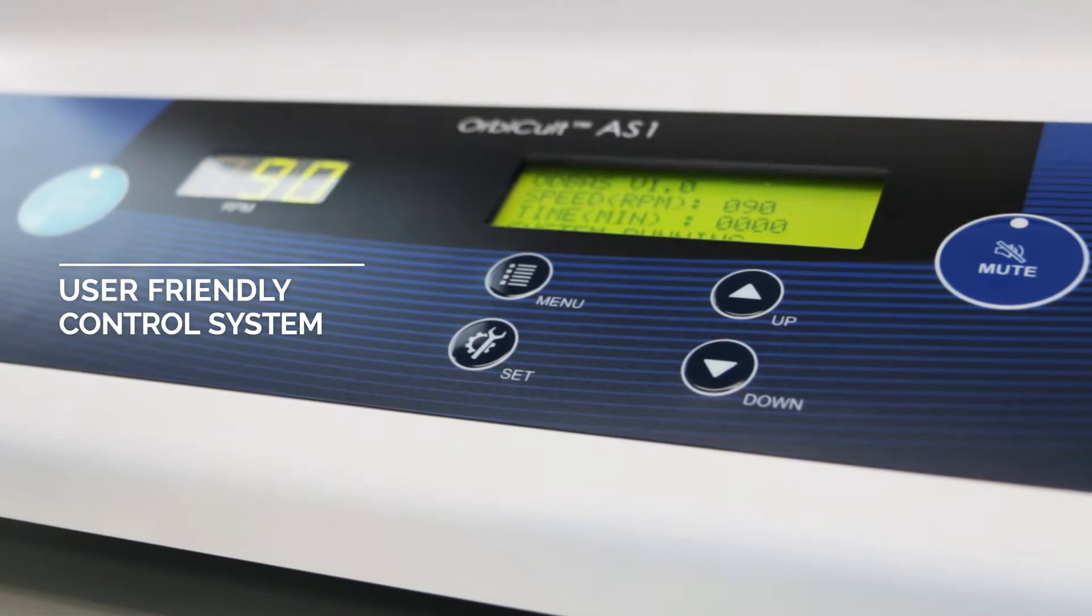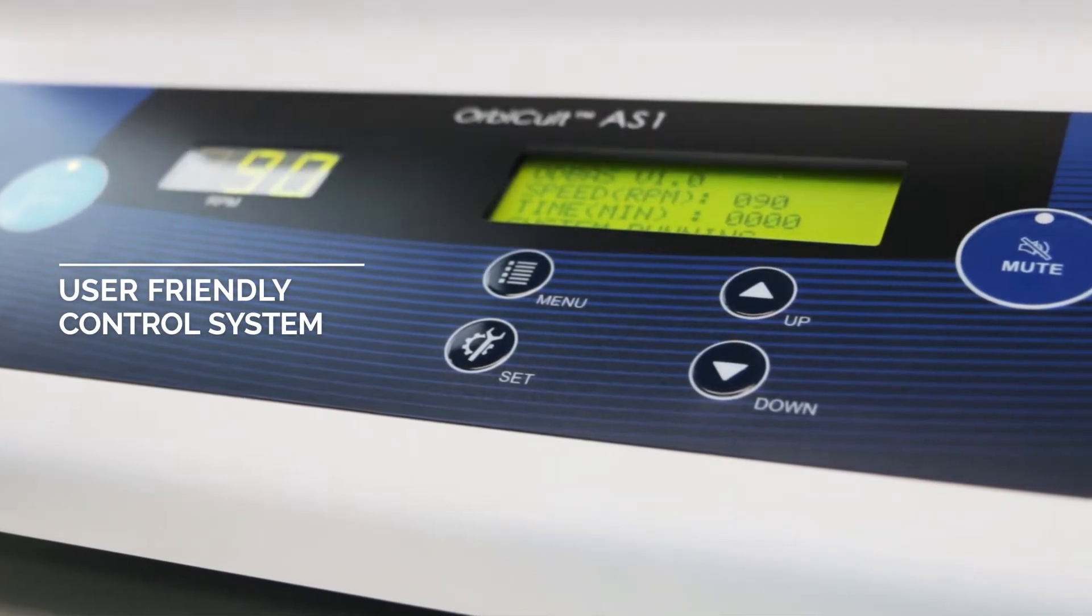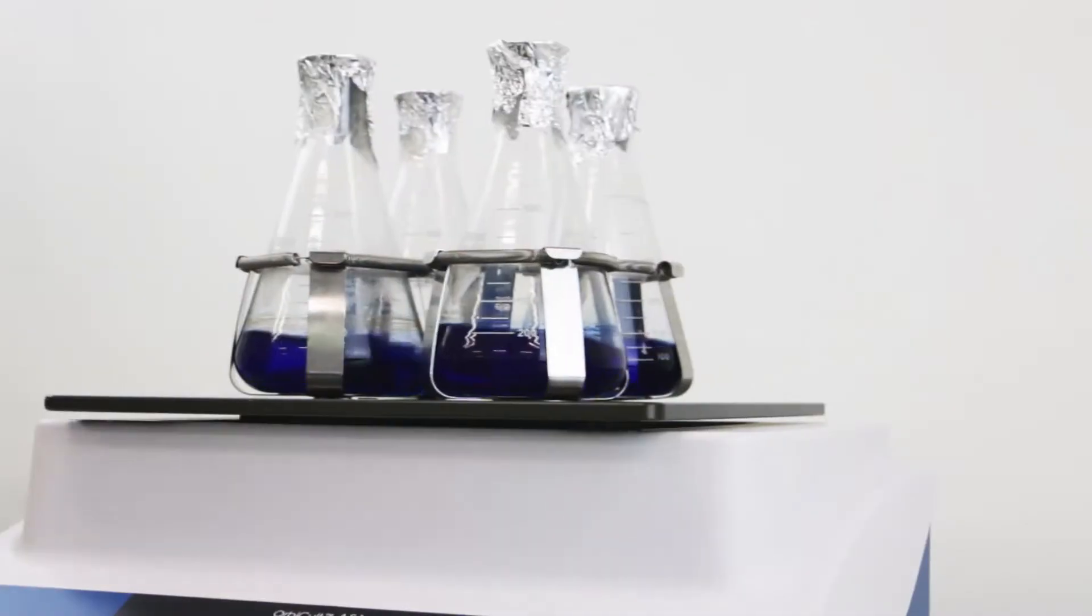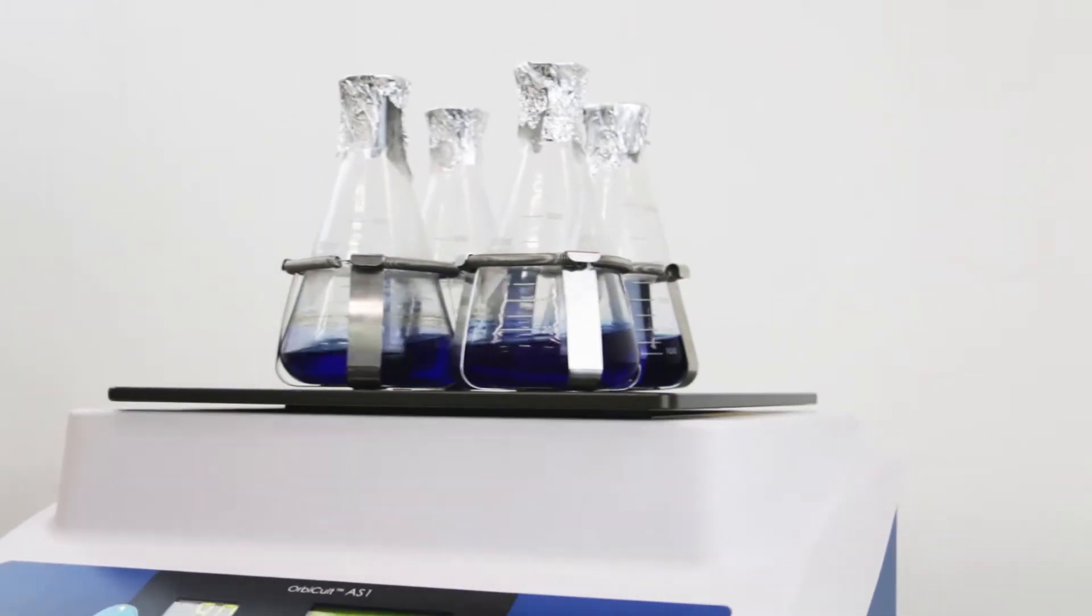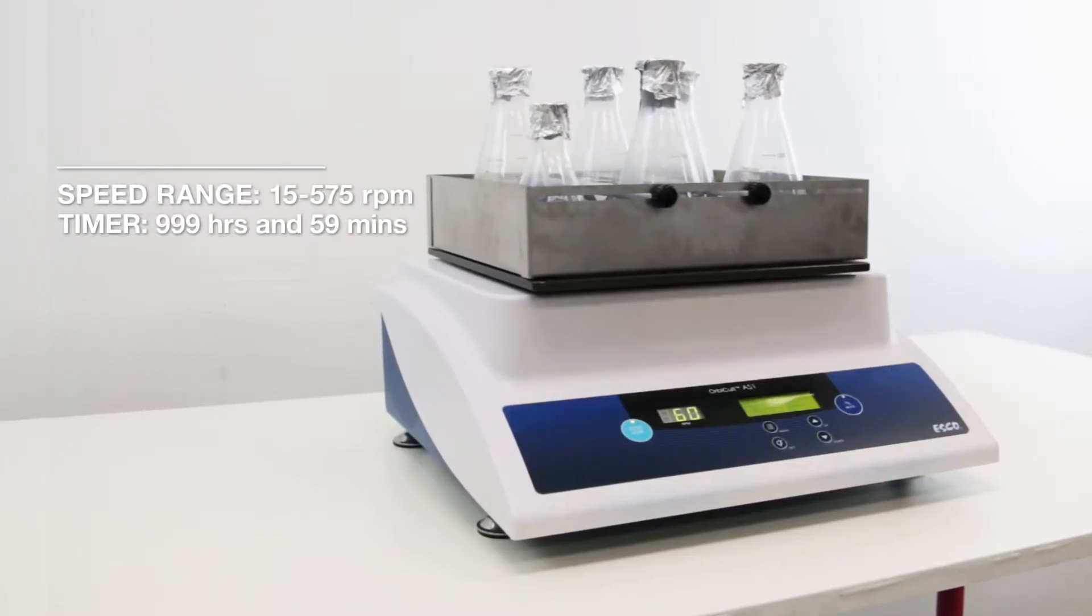User-friendly control system that displays all information simultaneously on the screen. The OrbiColt Ambient Shaker is capable of operating between 15 to 575 rpm with a time range of 1 to 999 hours and 59 minutes.